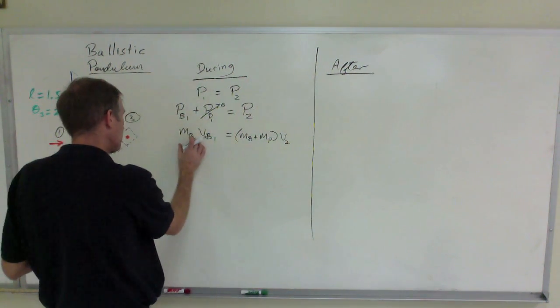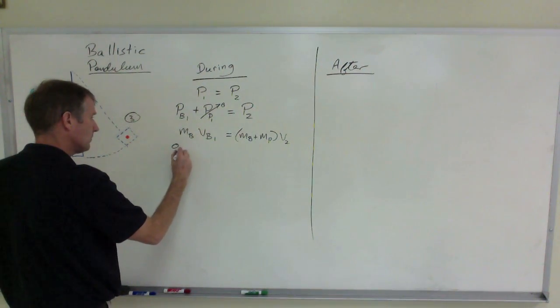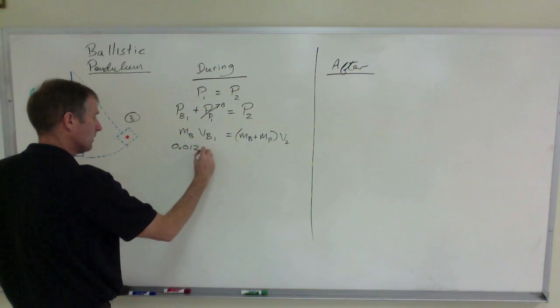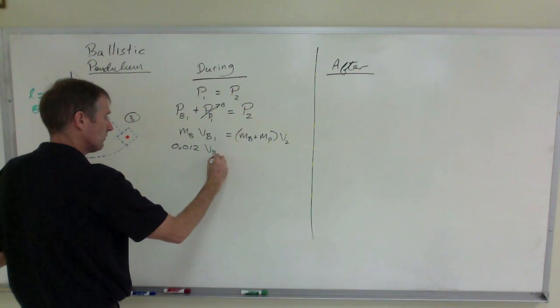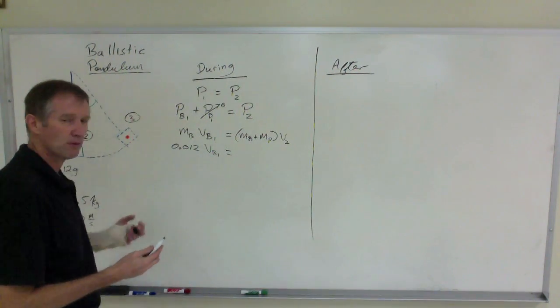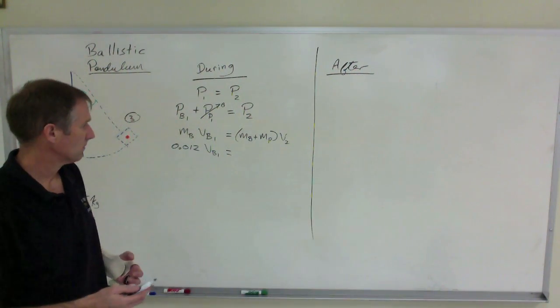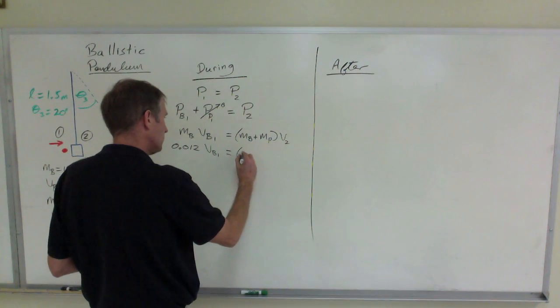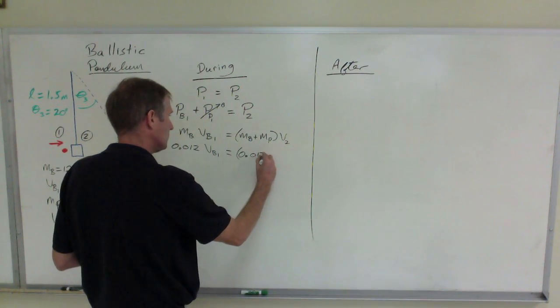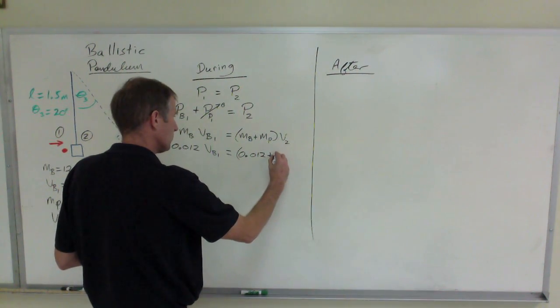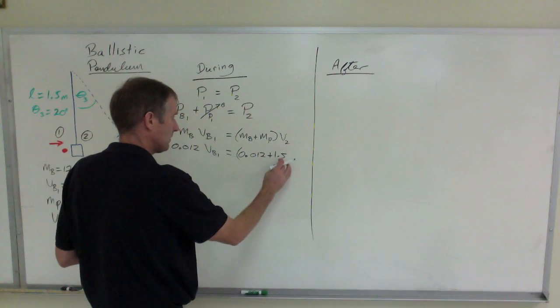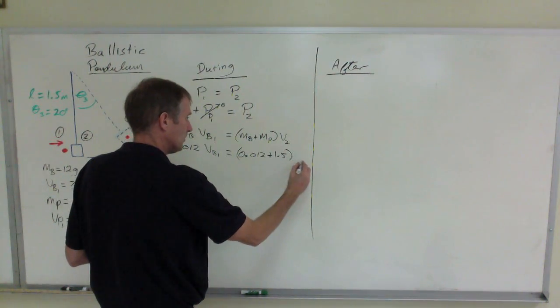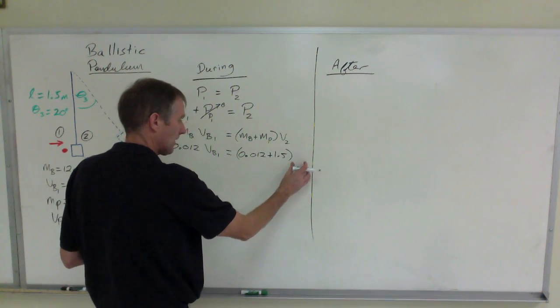When you start putting in numbers, this is 12 grams, which is 0.012 kilograms times the variable we're looking for, the velocity of the bullet before it hit the pendulum. And then add these two masses, 0.012 plus 1.5, that's the mass of the pendulum, times V2. Well wait a second, I don't know the value of V2.